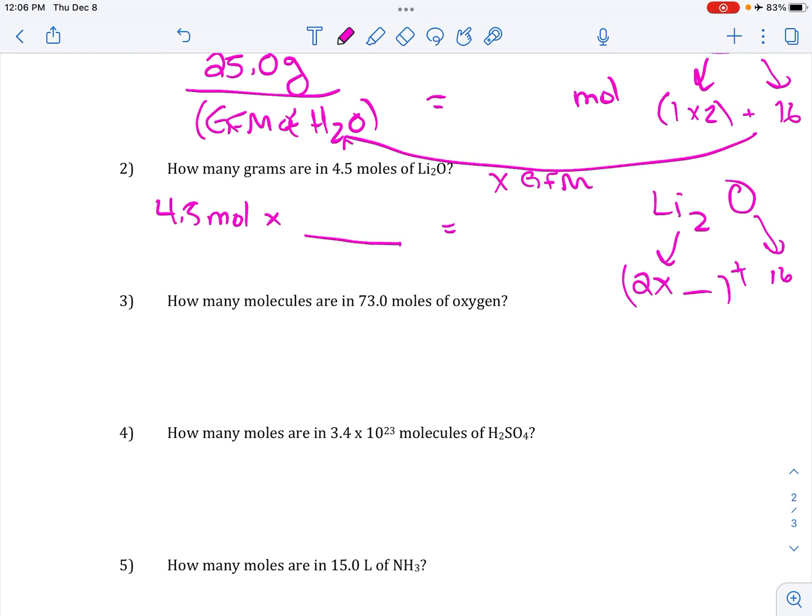How many molecules are in 73 moles of oxygen? So to go from moles to anything else, we're going to multiply 73 moles times, OK, with molecules, that's Avogadro's number, 6.02 times 10 to the 23rd. And then when you get your final answer, you should put it in proper scientific notation, which is when you have only one digit in the ones place, times 10 to the whatever.